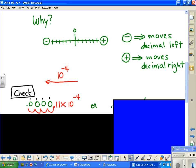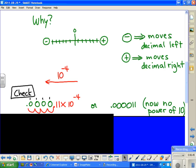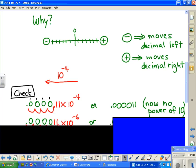That means that now our new number, or the actual number without a power of 10, is 0.00011. You'll notice the power of 10 is gone because we have the original number that did not require the power of 10.